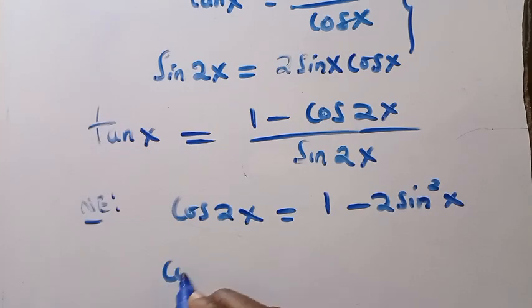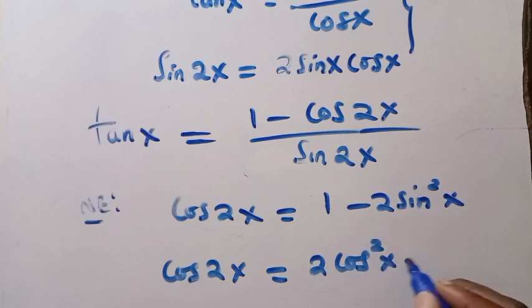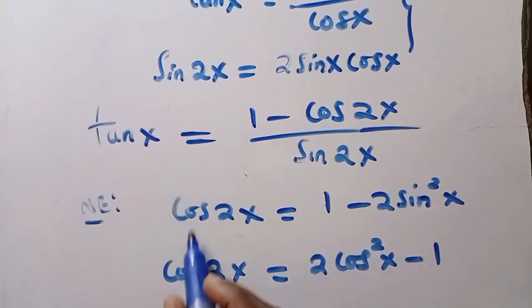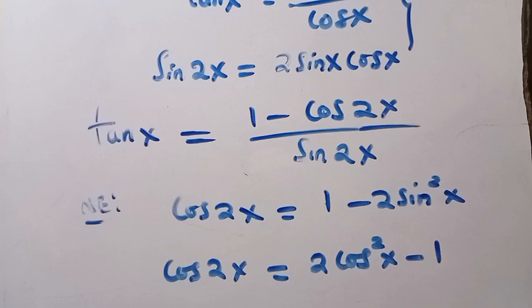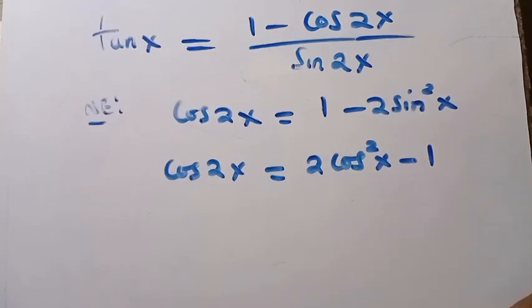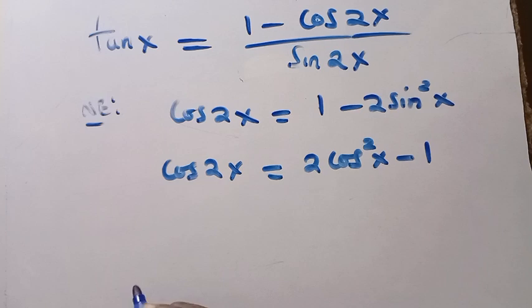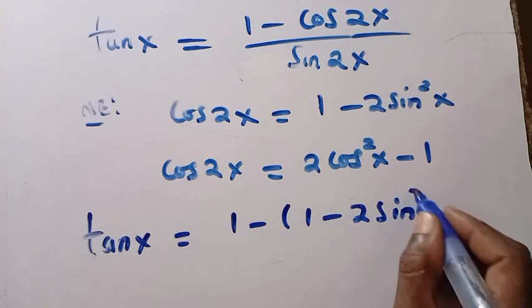Or we can simply say cos 2x equals 2 cos squared x minus 1. So these are the two double angle formulas for cosine. We still have another one which is cos squared x minus sin squared x, but we don't need that. Out of these two, we need cos 2x equals 2 cos squared x minus 1. So then let's try and replace this. By replacing this, we are going to have tan x. We are applying the first one: tan x equals 1 minus open bracket 1 minus 2 sin squared x, divided by sin 2x.